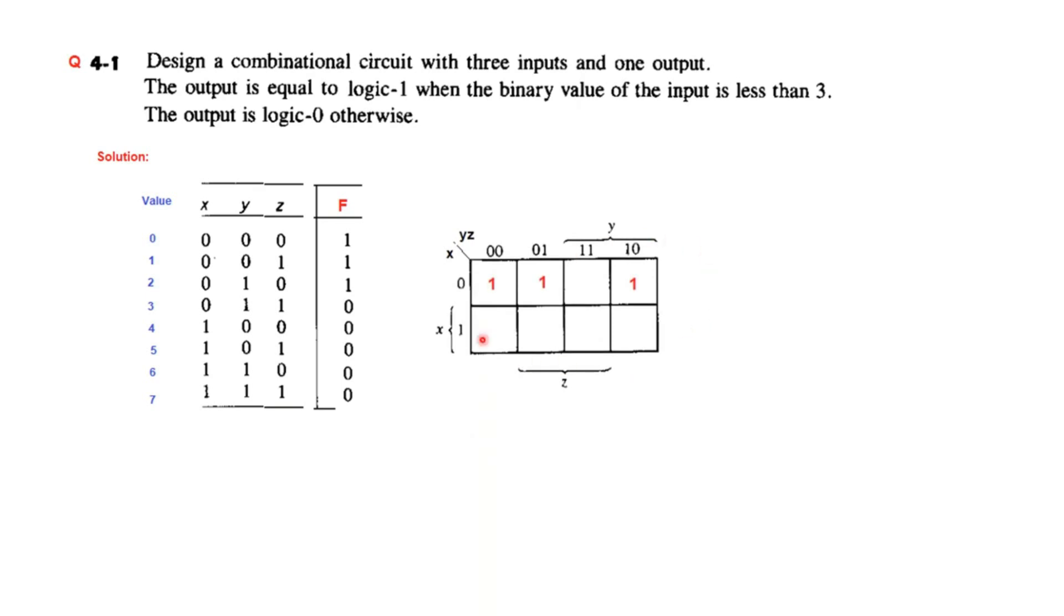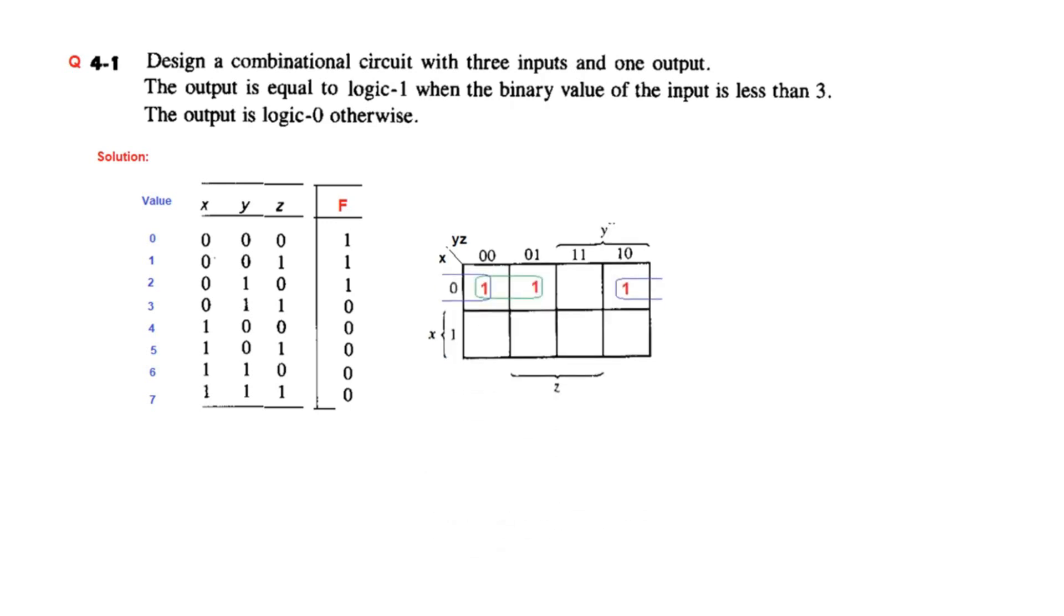We have plotted these three ones in the K-map, and now we will try to simplify. You can see these two can be paired, and these two can be paired. So our equation will be: F = x'y' + x'z'.